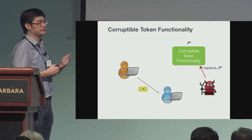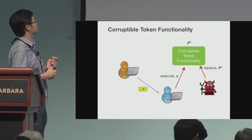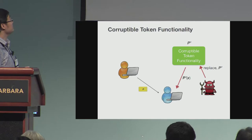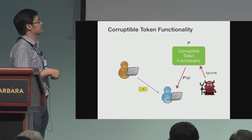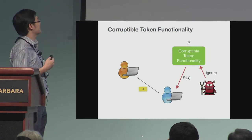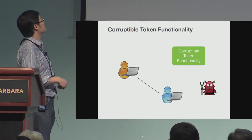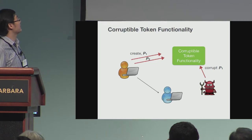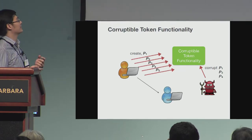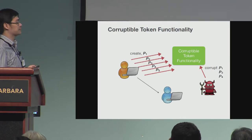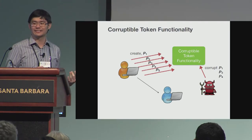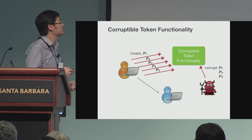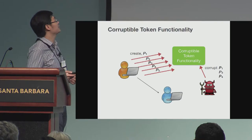In this case the receiver is not notified at all, and when he thinks he executes P on input X, he will get P-prime instead. The adversary can also choose to ignore the creation, and in that case he will not get P at all. The corruption is done one by one: if the sender tries to create multiple tokens, the adversary can choose to corrupt some tokens but not others, and cannot change his mind later. After he chooses not to corrupt a token, say P2, he will not be able to corrupt P2 again later in the protocol — so P2 is now actually tamper-proof.